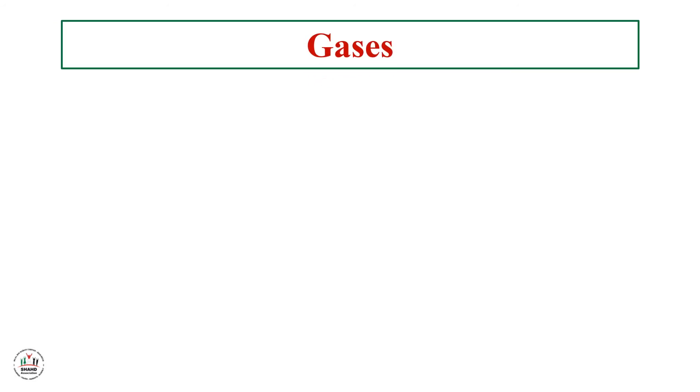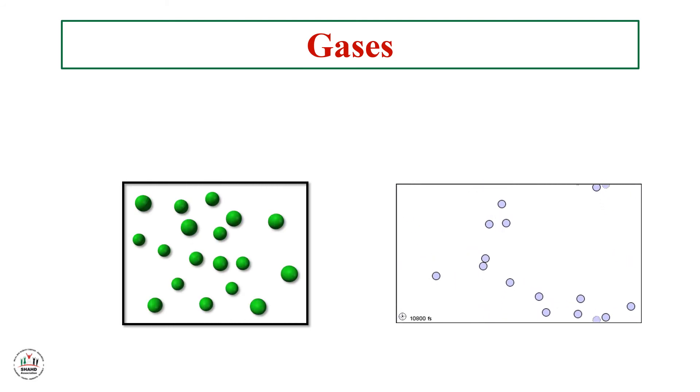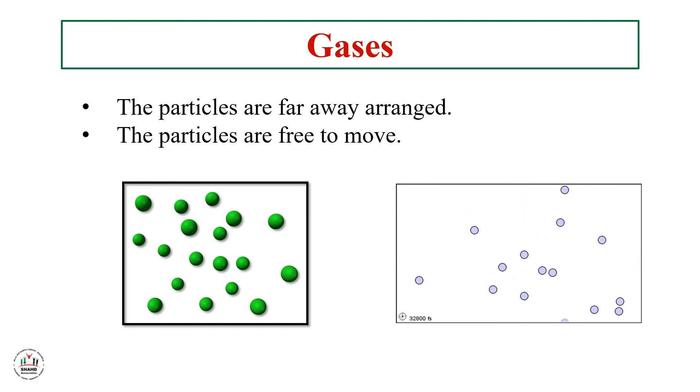Now we will talk about gases. Look at these pictures - what do you observe? How are the particles arranged? Are they close together or far apart? The particles are far away from each other and moving freely because there are spaces between them. The particles are far away arranged with distance between them. The particles are free to move. As you can see in the picture, the particles are moving freely. There is distance between them so they can move. From this we know that gases are compressible and expandable. We can expand them or compress them.